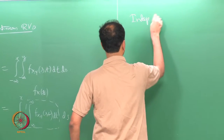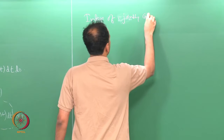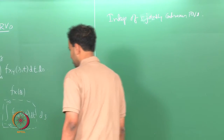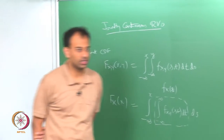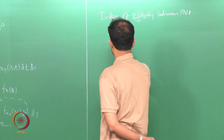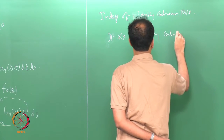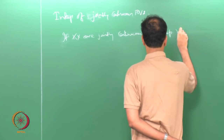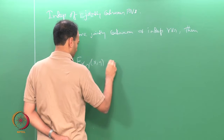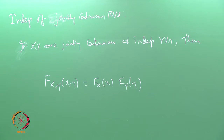Next I want to deal with the independence of jointly continuous random variables. If x and y are jointly continuous and independent, then from independence we know that the joint CDF F_{x,y}(x,y) must equal F_X(x) times F_Y(y).